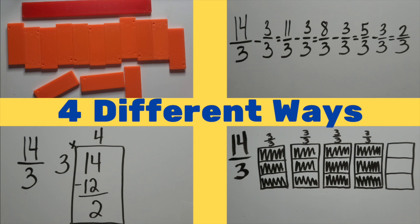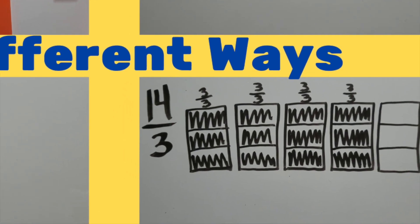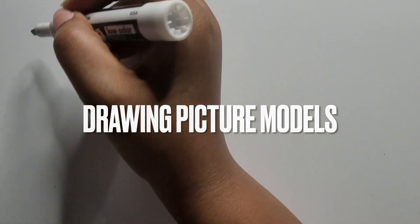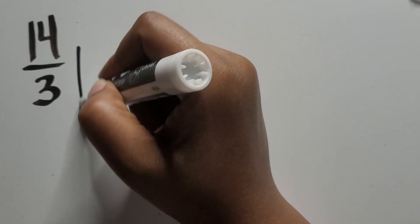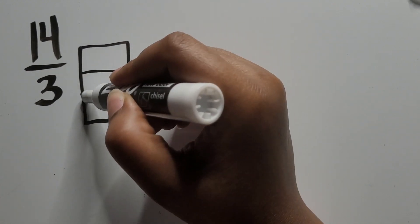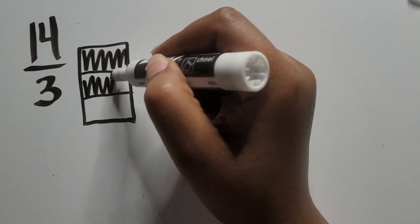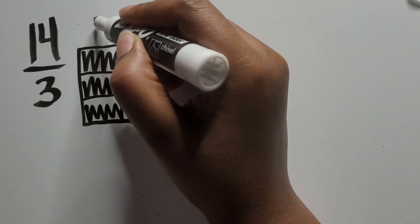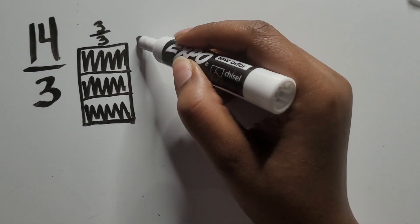The second way we will look at converting a fraction greater than one into a mixed number is by drawing picture models. We're going to use the same fraction 14 thirds in this example. Similar to using the fraction tiles, we'll need to think about how many thirds is equal to one whole and represent that in the picture model we draw. Again, we see that three thirds makes up one whole.